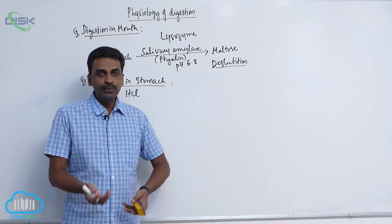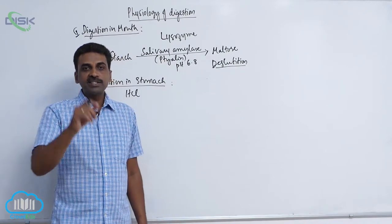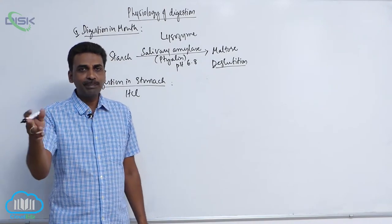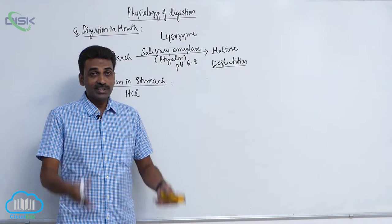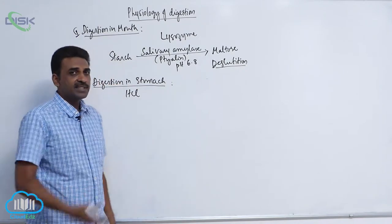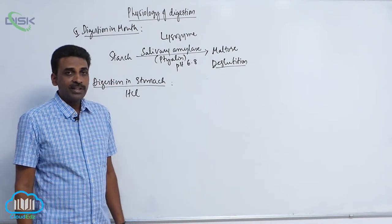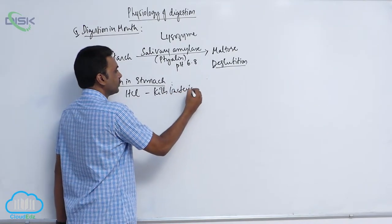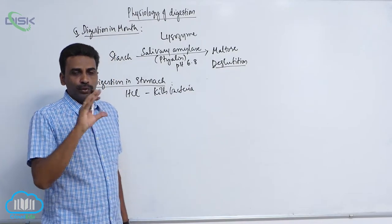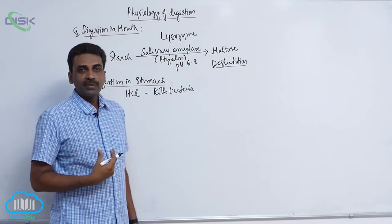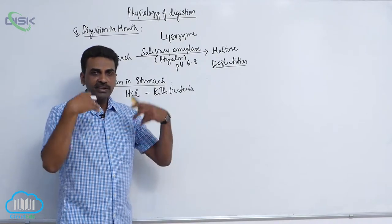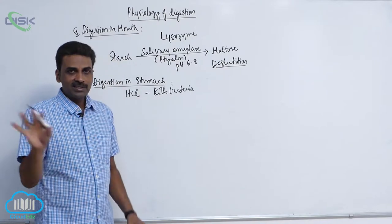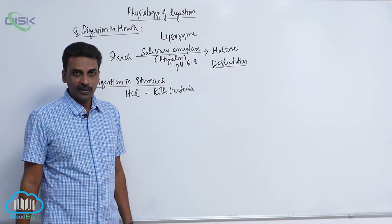Enzymes present in gastric juice include pepsinogen and pro-renin, and there is also hydrochloric acid. The pH of gastric juice is 0.9 to 1.8 — highly acidic. Hydrochloric acid kills bacteria. Although we take cooked food, some bacteria still enter along with food and water, and HCl kills those bacteria.